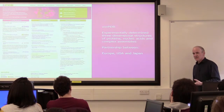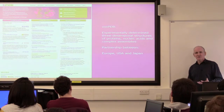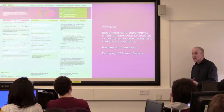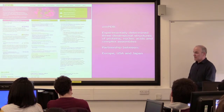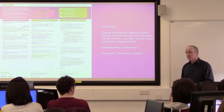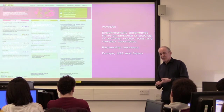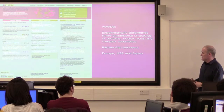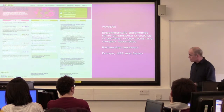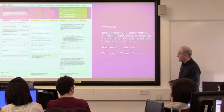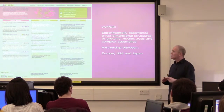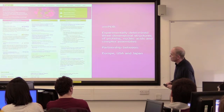It has structures of proteins, nucleic acids, and complex assemblies, determined by a range of different methods. X-ray crystallography dominates still at the moment. There are also NMR structures, and there's an increasingly large number of three-dimensional structures determined by cryo-electron microscopy, as that technology has gone through a huge explosion in the last couple of years.